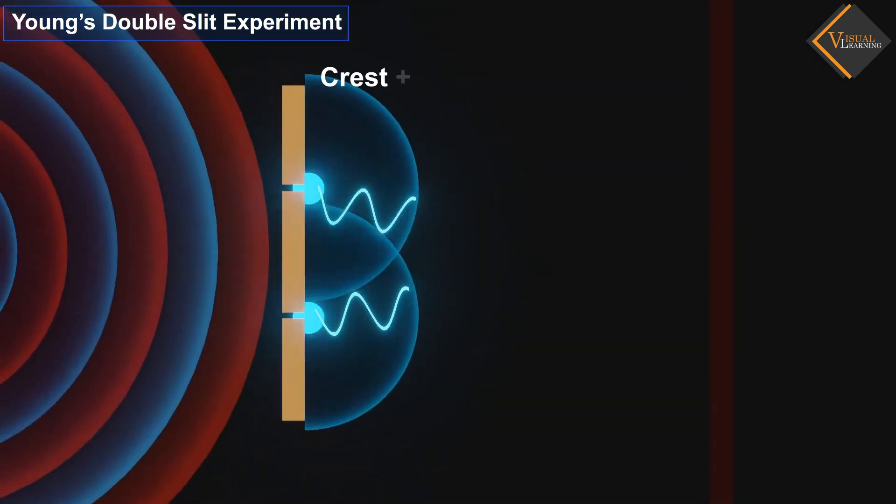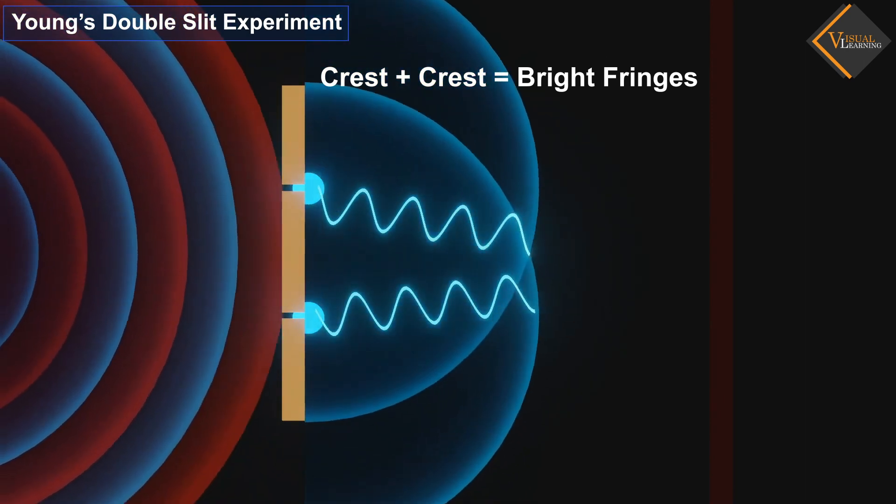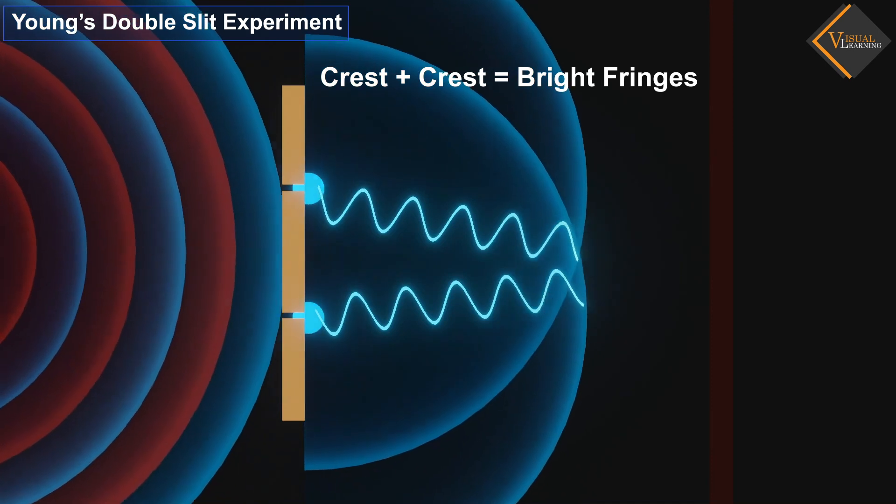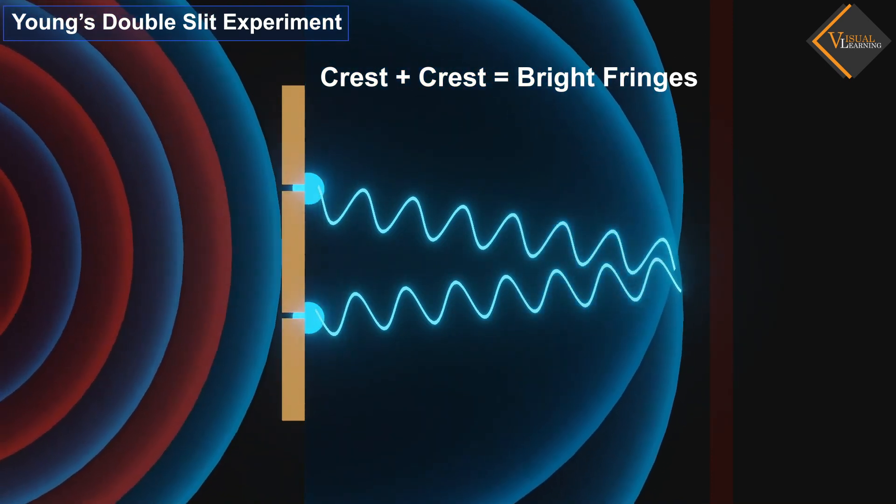When a crest of one wave superimposes with the crest of the other wave on the screen, the two waves combine to form a new wave with higher intensity at that point, resulting in bright fringes on the screen.